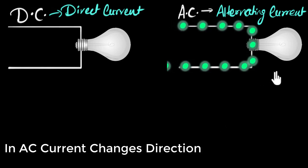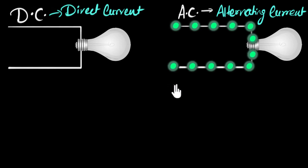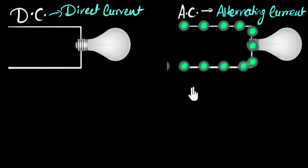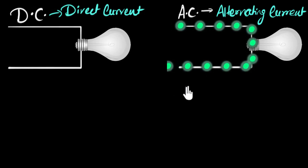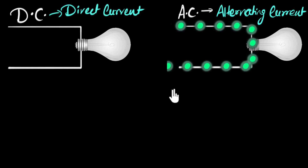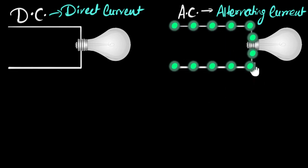But why does that make our bulb flicker? Let's look at these electrons a little bit carefully in slow motion. As the electrons are going forward, notice when it's about time to change the direction, they first come to a stop and then change the direction. They go back, and again go to a stop, and then change the direction — forward, stop, backward, stop, forward, stop, and so on. Every time the electron stops, the current goes to zero.